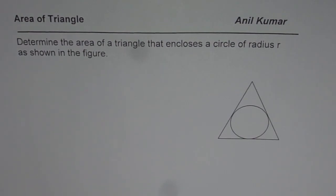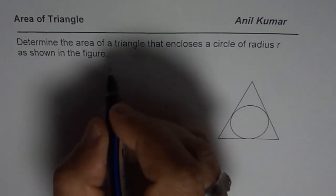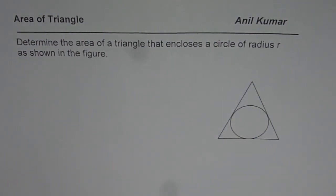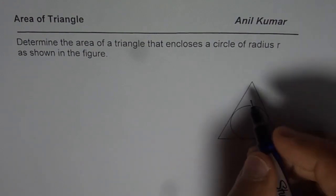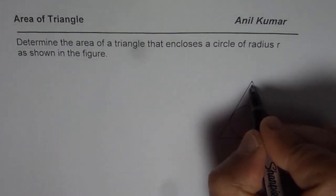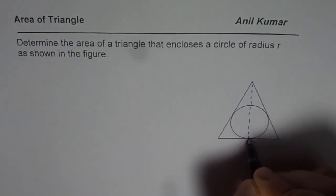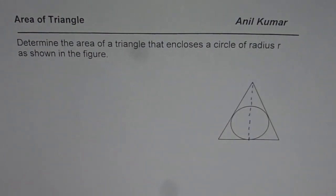Now to find area of a triangle what we need to do is we need to find base and the height. Let us draw a perpendicular from the vertex to the base. So that gives you the height and base is right there.